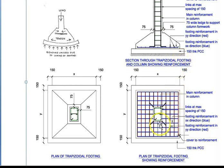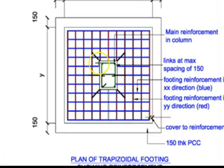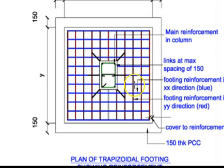In the plan view, the black dots show the reinforcement inside the column. The green ring formed around them represents the links, which are provided to hold the column reinforcement in position and to provide shear resistance. I hope the trapezoidal footing is now clear.